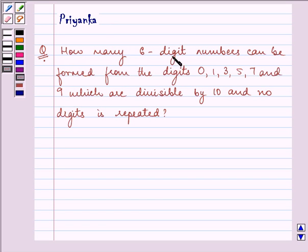The question says, how many six digit numbers can be formed from the digits 0, 1, 3, 5, 7 and 9 which are divisible by 10 and no digit is repeated.